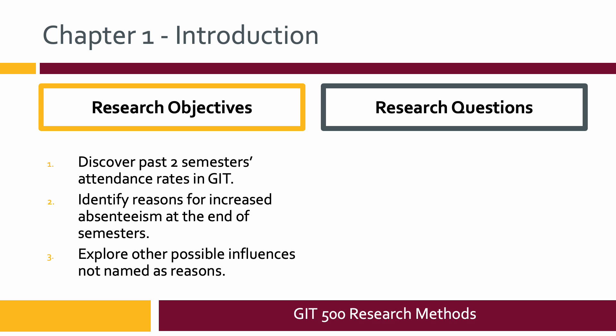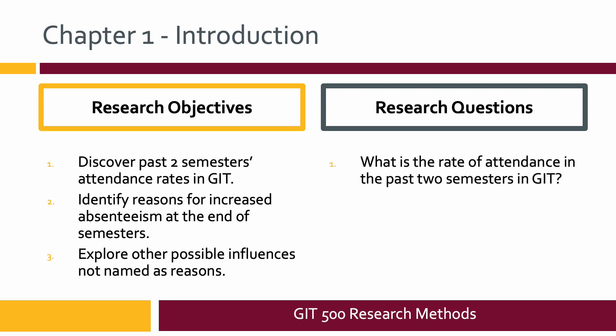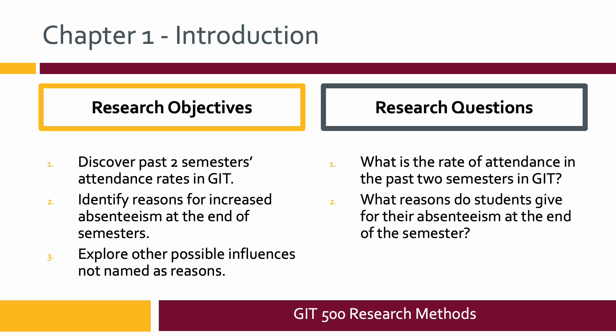If I wanted to write the same objectives as research questions, I would write: What is the rate of attendance? What are the reasons students give? And what are other possible influences? It doesn't matter which way you go, but use one or the other. Do not mix objective statements and research questions.